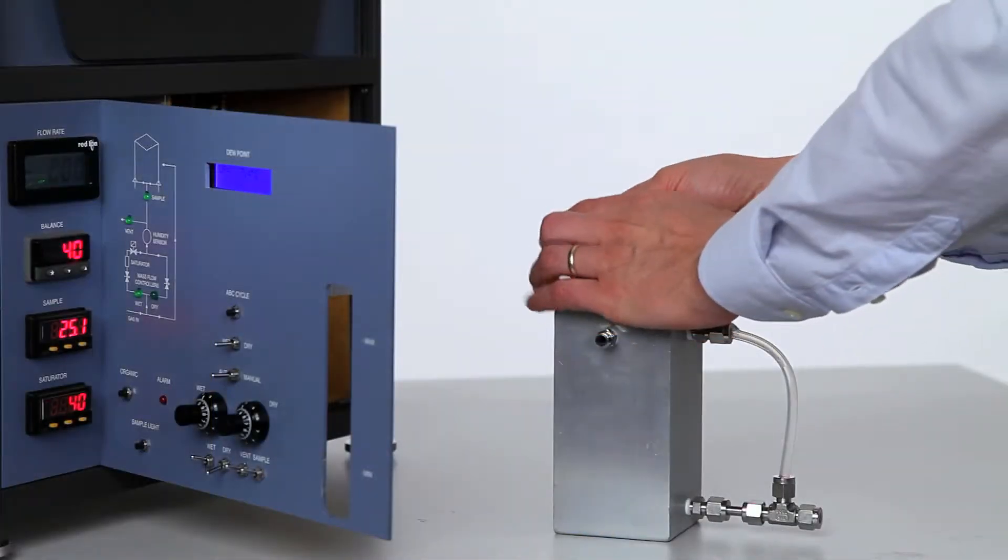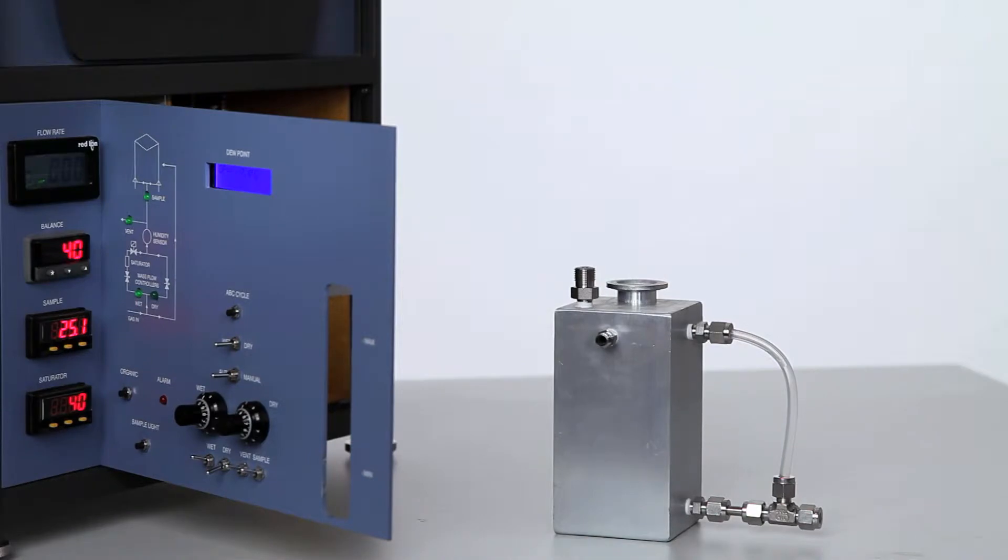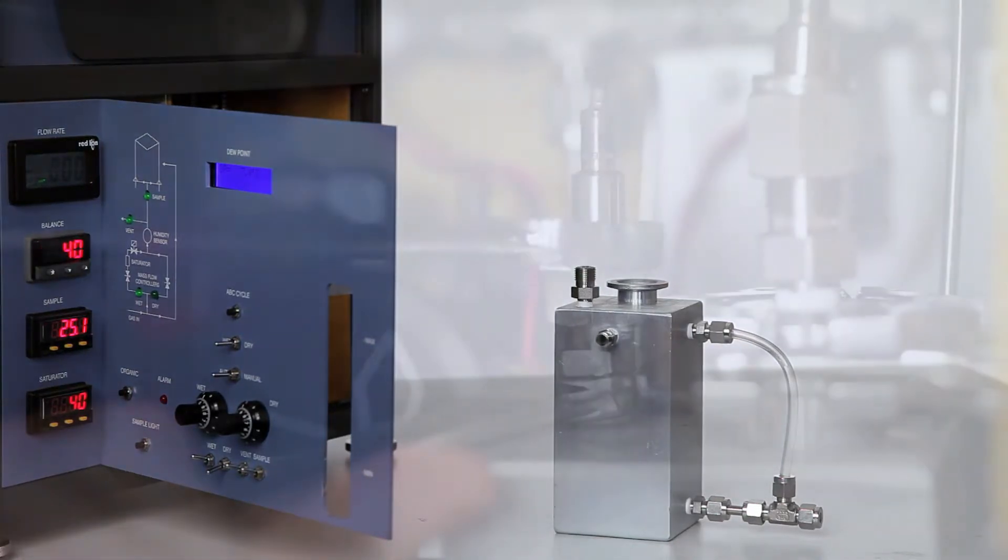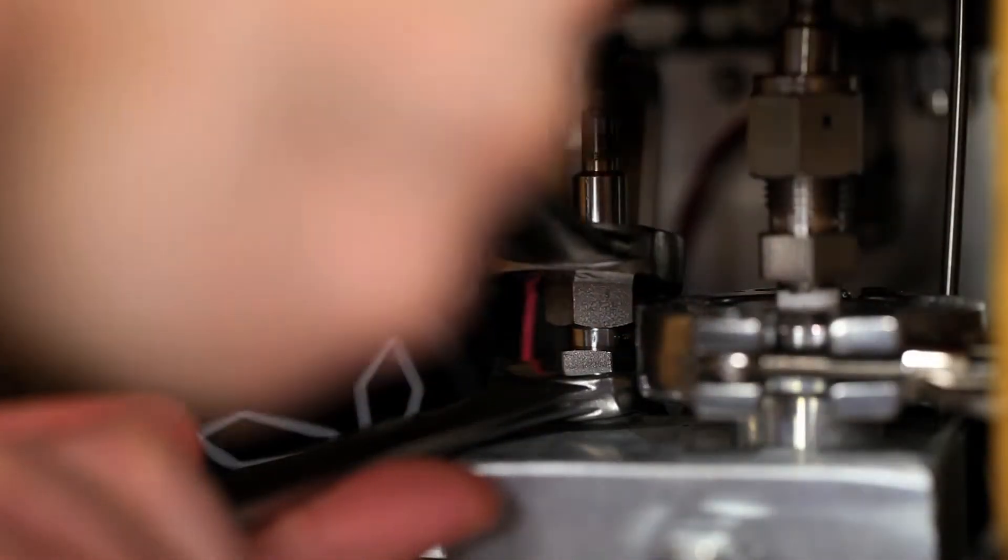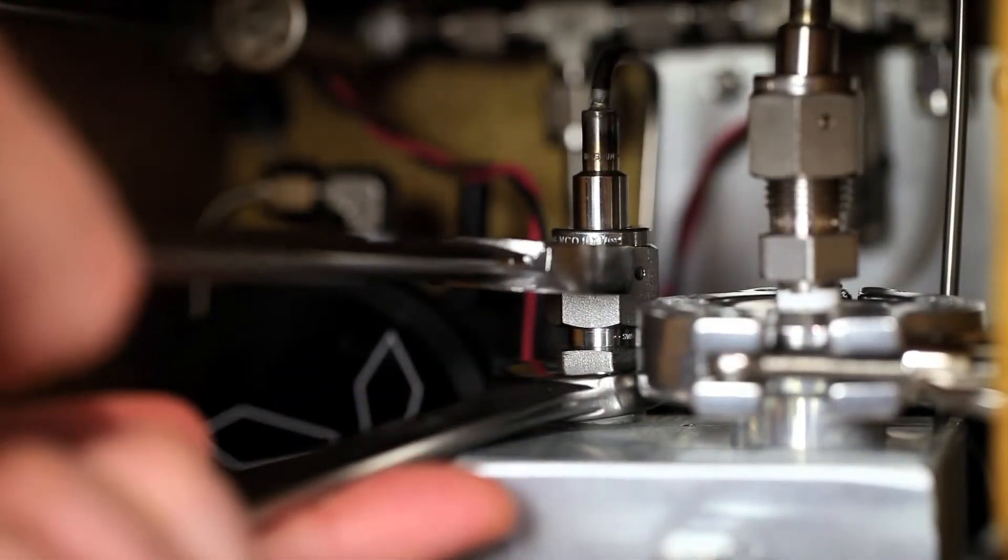Fill the saturator to the level shown on the instrument marked MAX with distilled water. Install the saturator and reconnect VCO fittings.